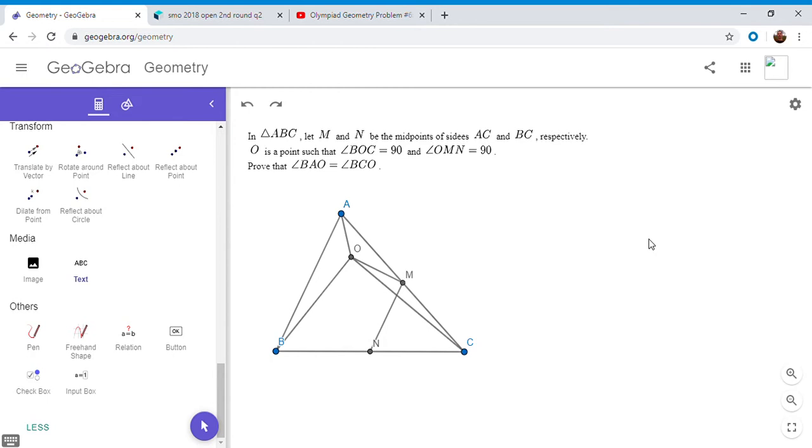So we have a triangle ABC. M is the midpoint of AC, and N is the midpoint of BC.